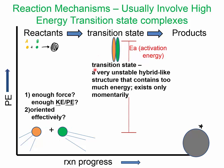The two reacting molecules need to collide — and not only do they need to collide with enough kinetic energy and potential energy, but they need to be oriented effectively. If they collide on these particular edges it might produce product with enough force, but if they collide on the wrong edge, that may not be an effective collision.